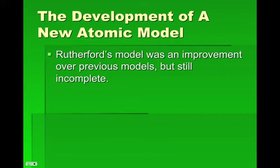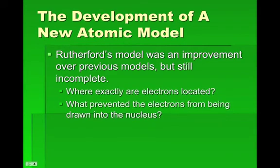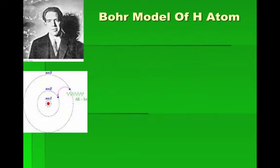We left off with Rutherford's model — he shot alpha particles at a piece of gold foil, and they went off in some crazy directions every once in a while. Rutherford figured out the whole nucleus thing. He found these positive things and knew that an atom is neutral, so there had to be some kind of negative particle — the electron. But he didn't know where the electrons were located or what kept them from being sucked into the nucleus, since opposites attract. That leads us to Bohr.